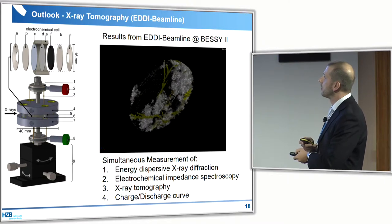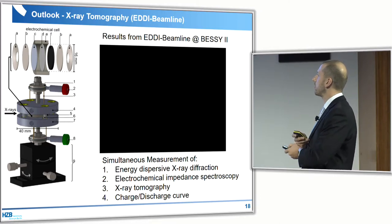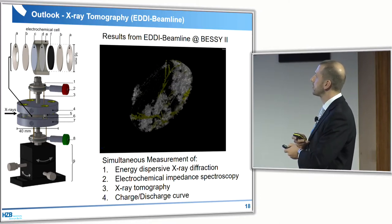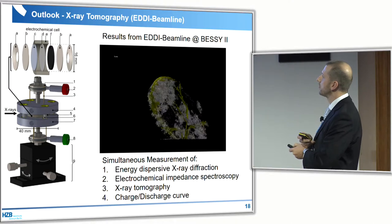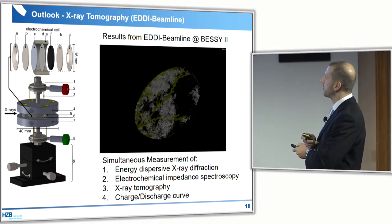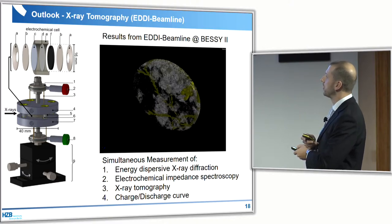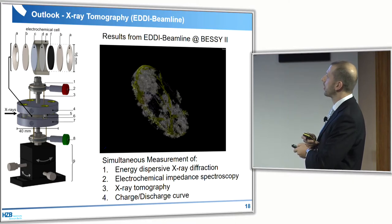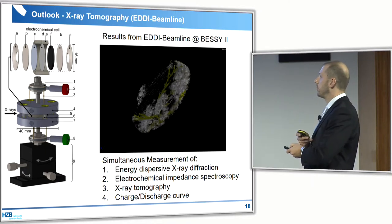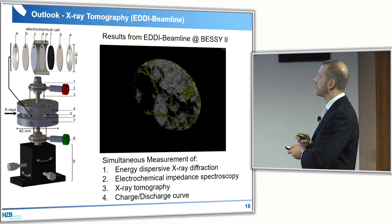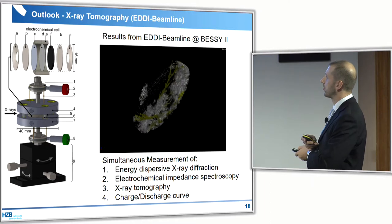As a next step, we are performing operando tomography measurements. This measurement was taken at the synchrotron radiation source at BESSY II. In yellow you can see the sulfur, in white the dry areas of the gas diffusion layer, and darker areas are wetted areas. The next cell version is already built, and we hope to get even better wetting and charge-discharge curves. The great advantage is that we can simultaneously perform energy-dispersive X-ray diffraction, electrochemical impedance spectroscopy, tomography, and charge-discharge curves at the same time.